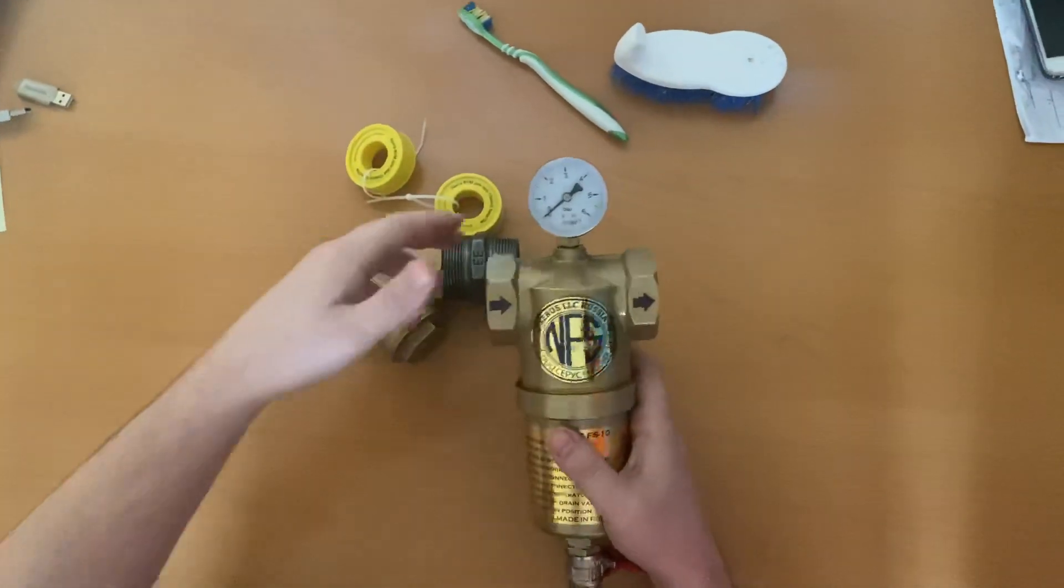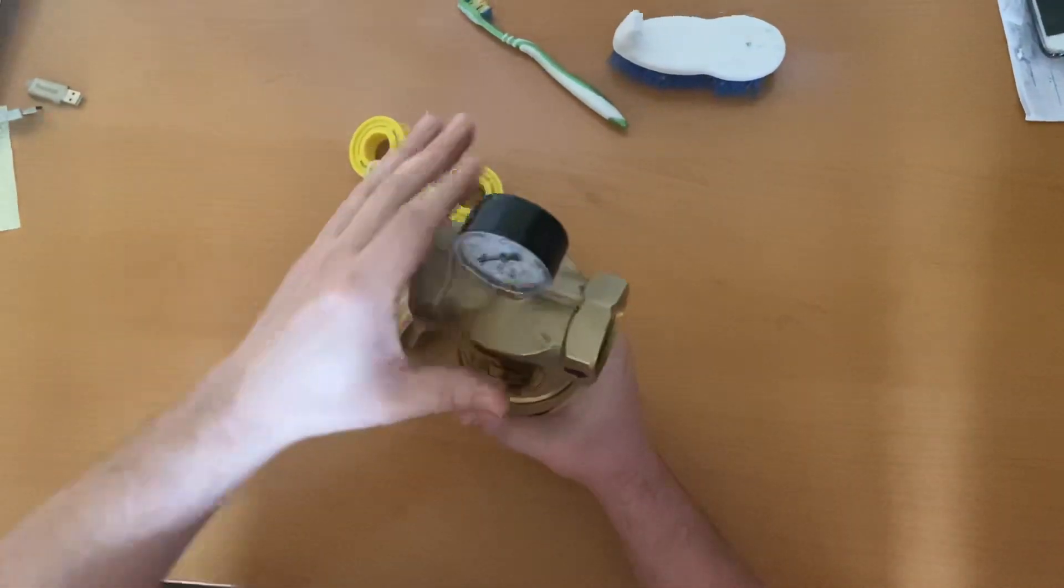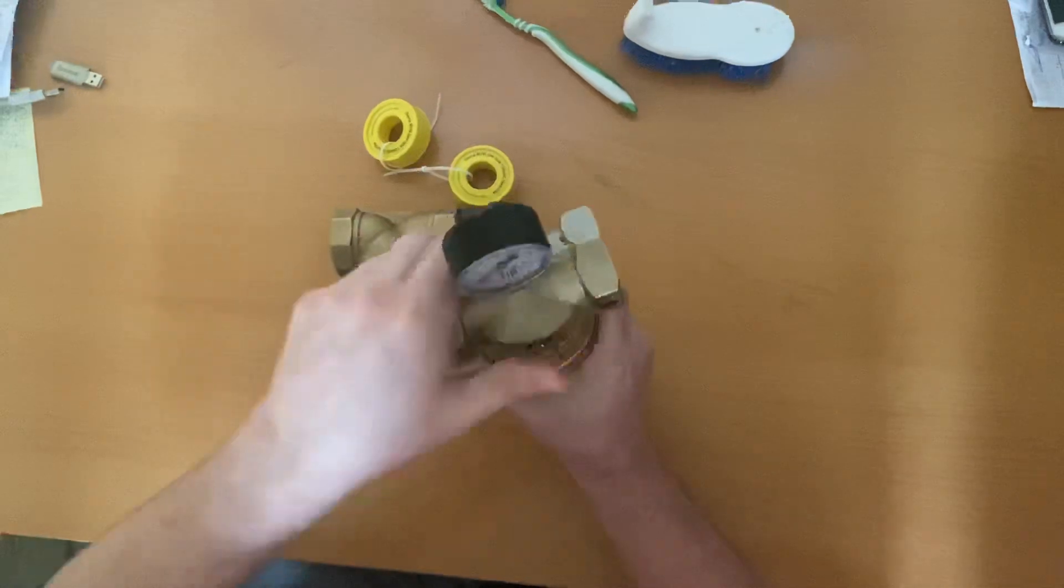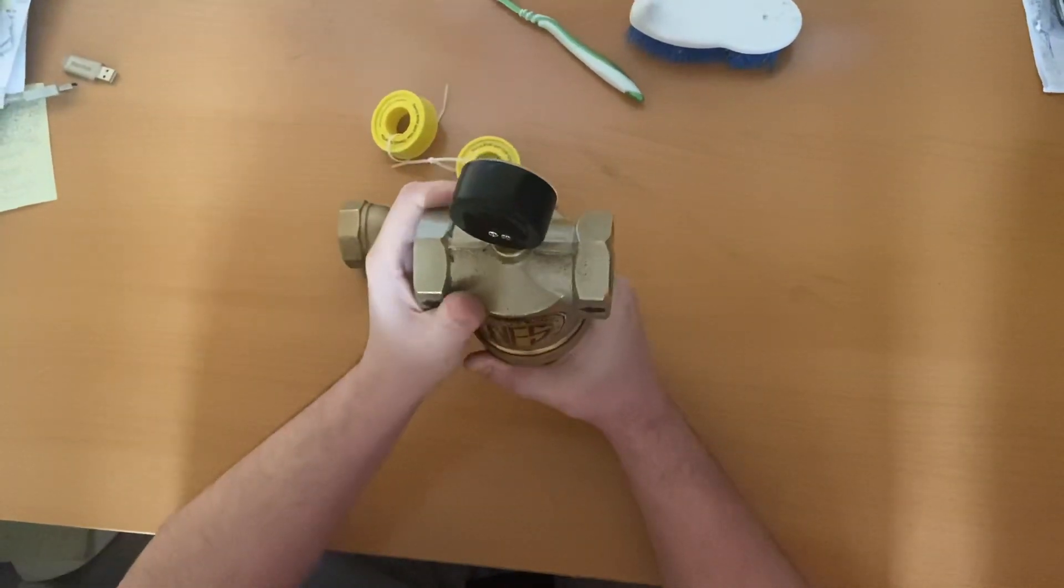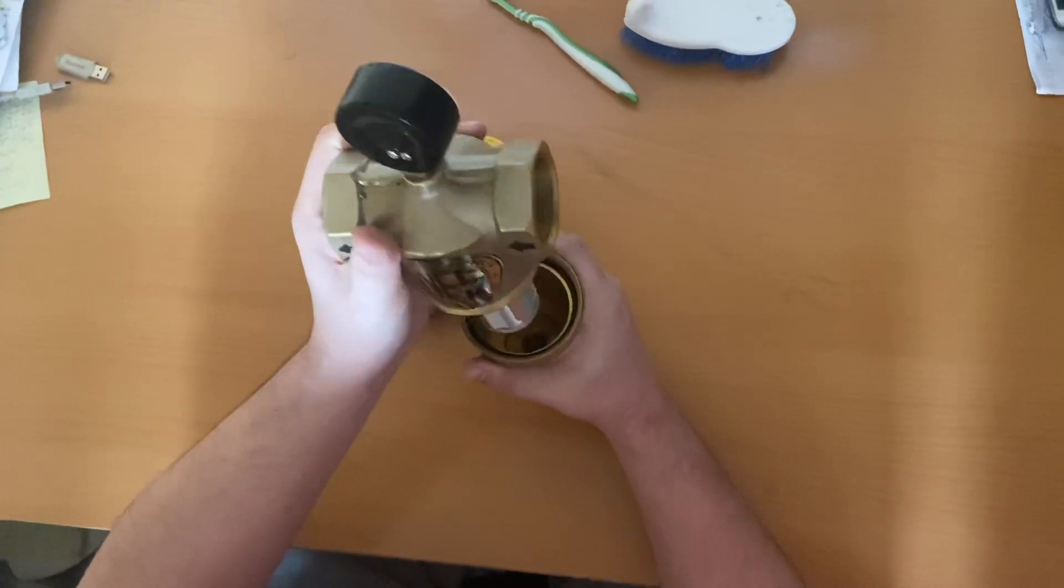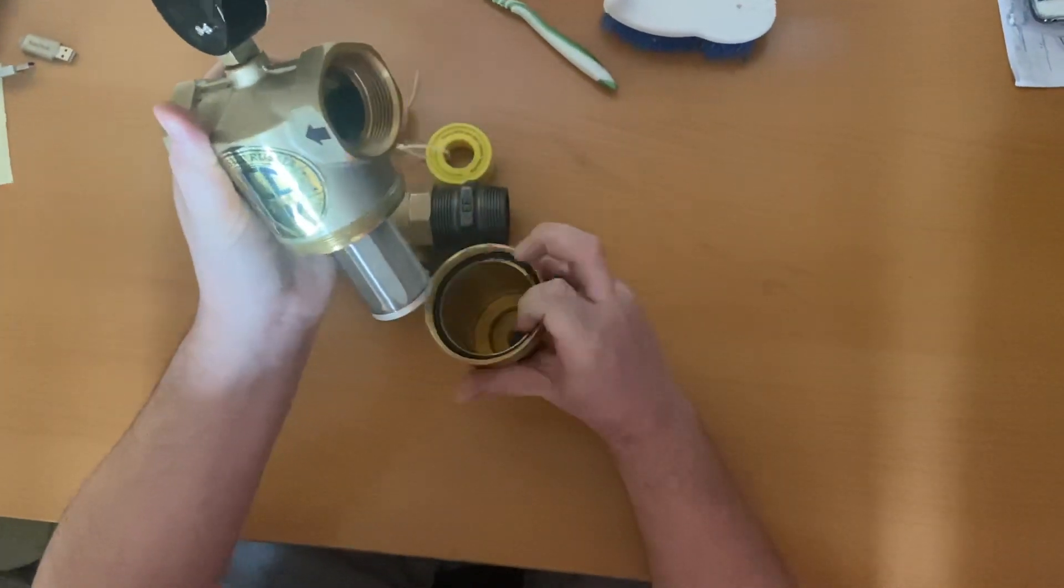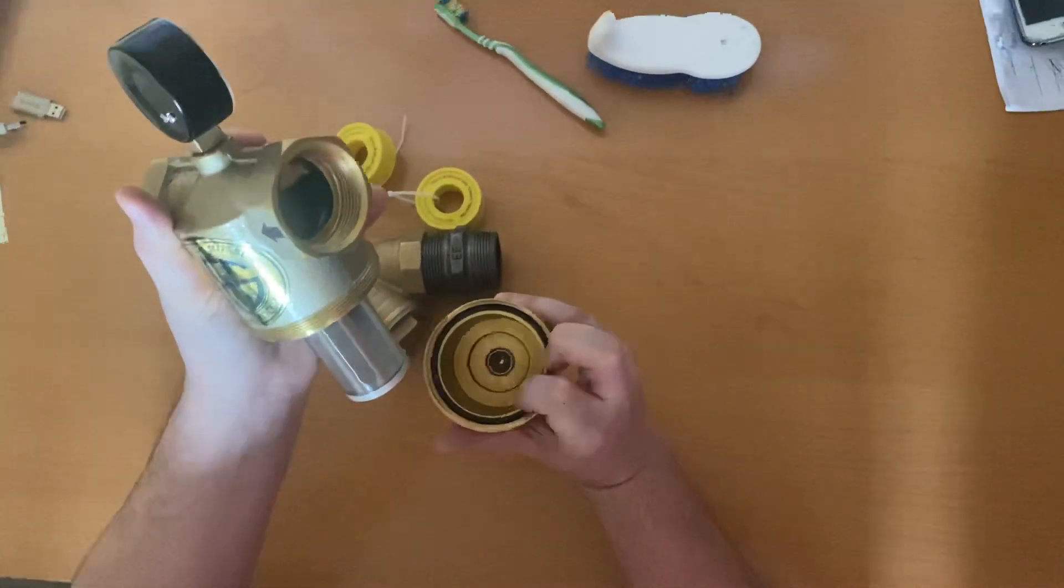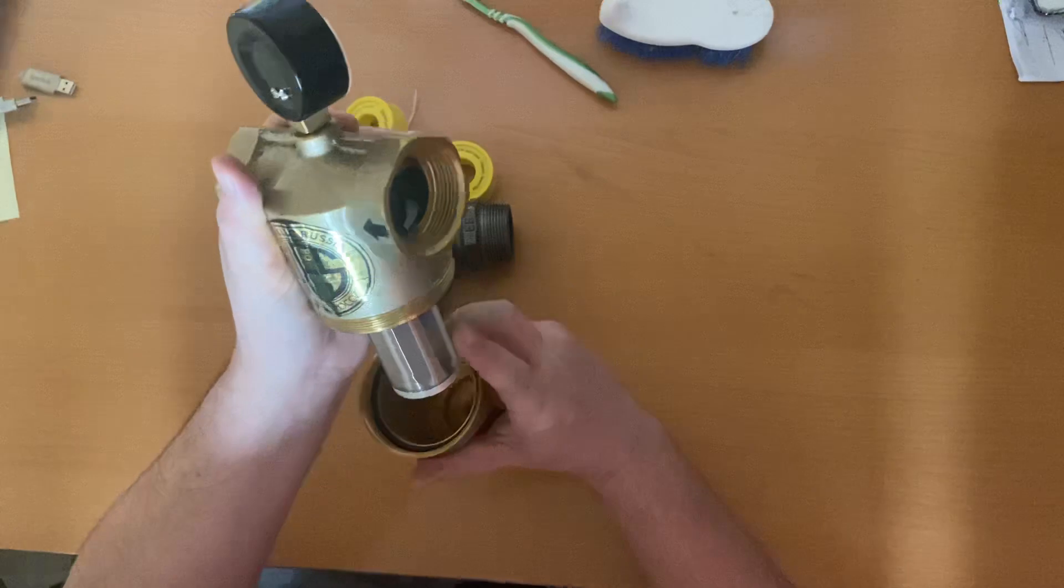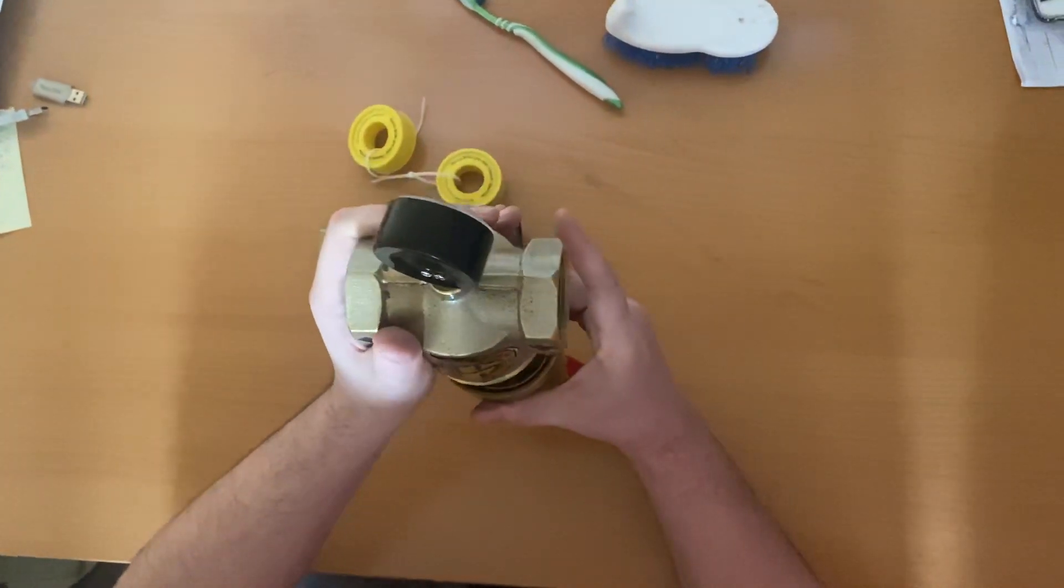When you open up the filter, do it very gently. First, fully unscrew it and pick it up easily. The thing is, you don't want this microwire to go against the walls of the filter because they're metal and sharp and can tear this knitting. So when you're opening, make sure it's very gentle.